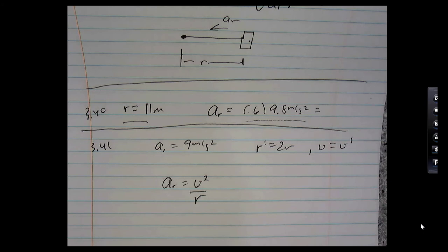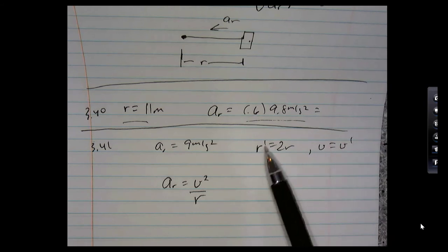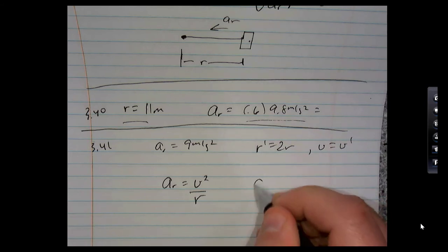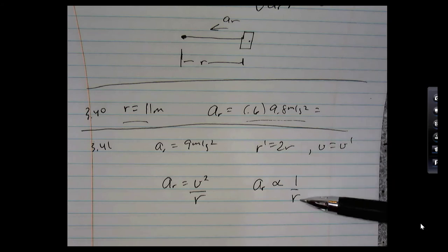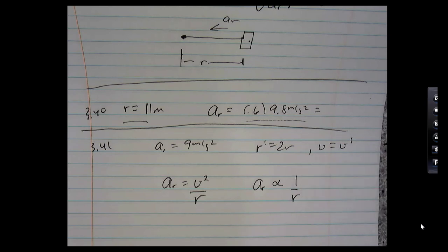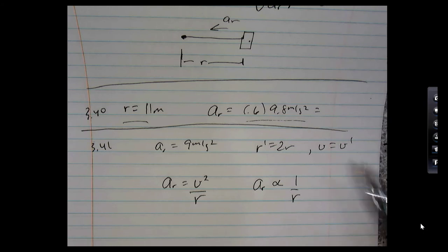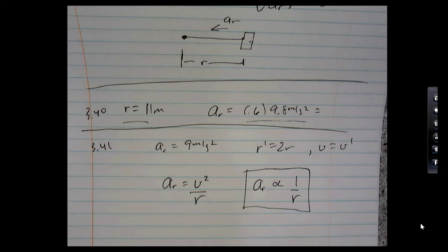The acceleration is proportional to 1 over r. So if you make the radius twice as big, you have to make the acceleration half as much — they're inversely proportional. As long as you keep the speed the same and make the radius twice as big, the acceleration is going to be half as much. The acceleration is inversely proportional to the radius.